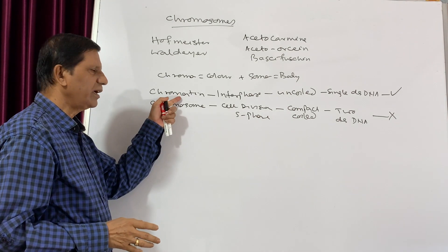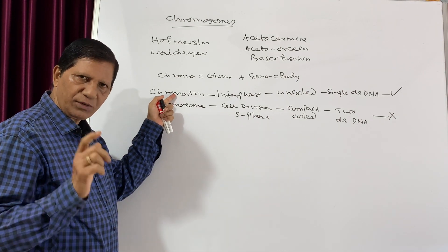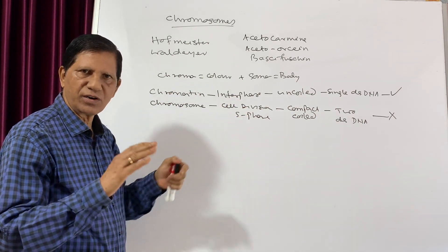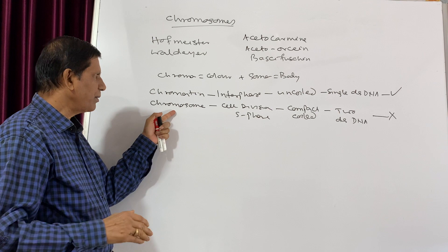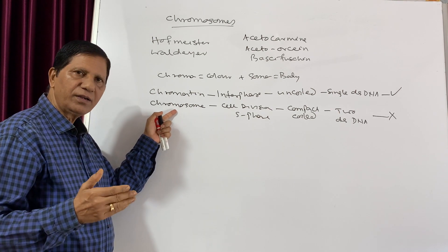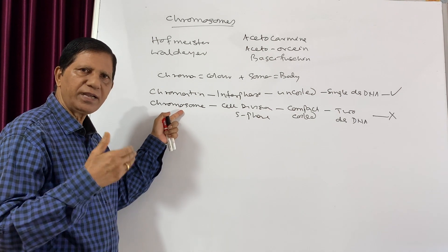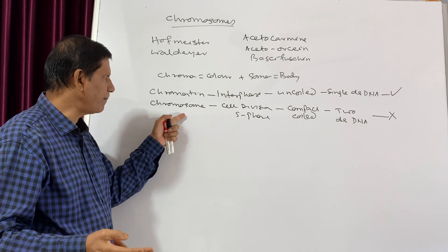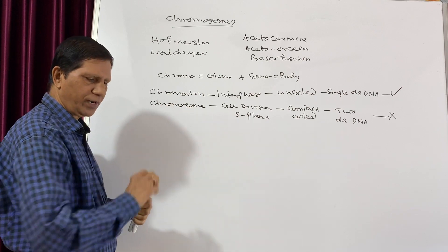The name 'chromatin' is usually used during the interphase stage when the cell is not dividing, and it is uncoiled. But during cell division, the chromatin duplicates, the DNA duplicates, it becomes double-stranded, and at that time it is known as chromosome. This is the basic difference.